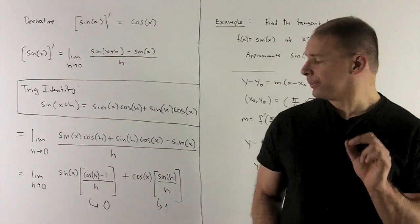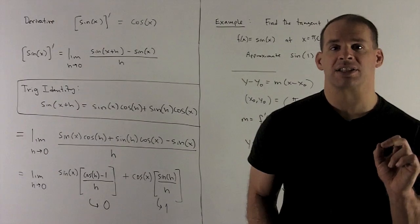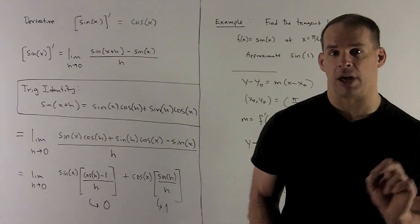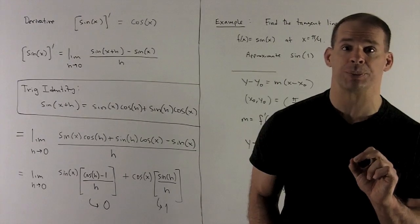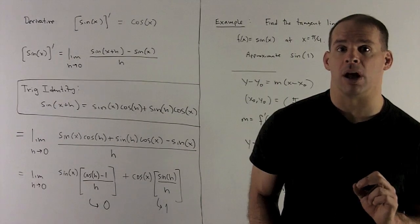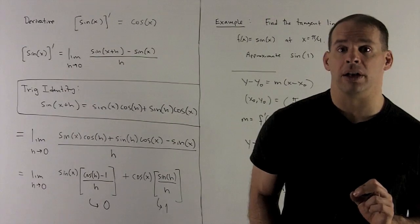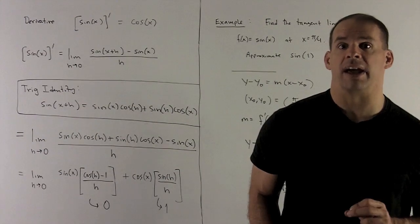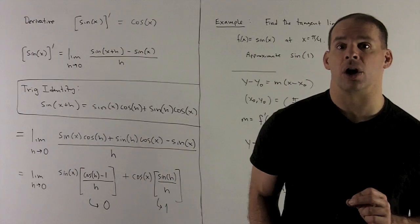For the other term, I have cosine x times sine of h over h. The cosine x we treat as a number with respect to the limit of h. That sine of h over h, we've done that one before also. That's going to go down to 1. So the only thing that's going to survive this is going to be cosine of x, and that's going to be our derivative.